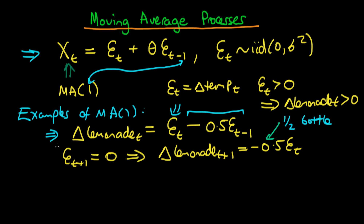That's an example of a moving average of order 1 process. For goods with a higher shelf life we could add further lags — for example, 0.25 times the error at time t minus 2 if the good lasts two days rather than one. That's how we generalize this to higher-order moving average processes.